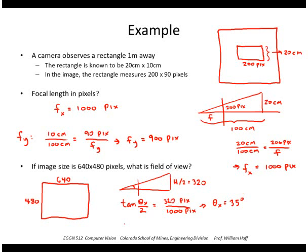Similarly I can solve for theta y. It's going to be 240 pixels divided by 900 pixels, which gives me theta y of about 30 degrees. So it can happen that these pixels are not square. Ideally you'd prefer them to be square, but if they're not, you actually get two focal lengths.